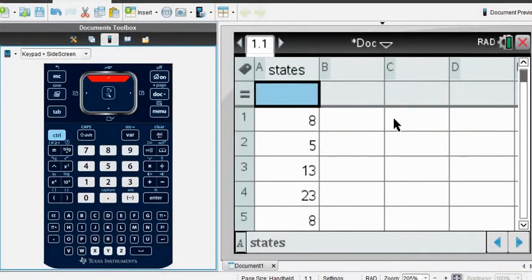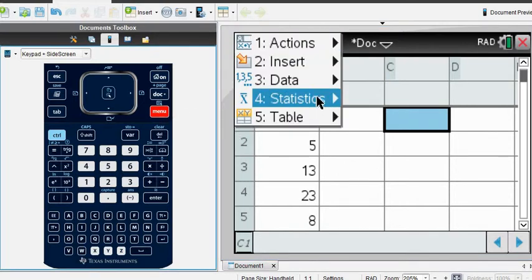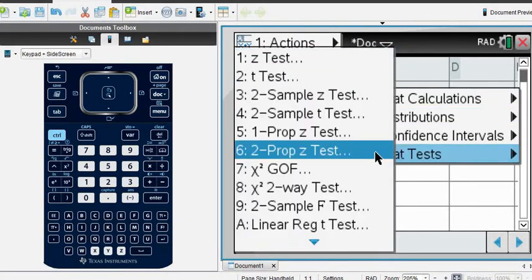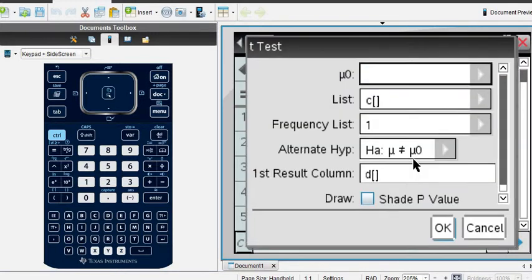Once you have done that, I'm going to come over to another cell. I want to be able to draw it, so in order to draw it I have to do it in the spreadsheet screen. I'm going to select menu, go to the statistics menu which is option 4, and then we have stat tests. Under stat tests I'm going to select the t-test.